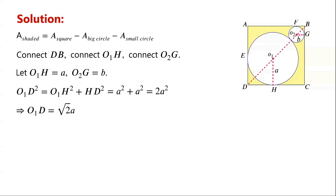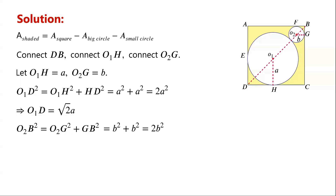Similarly, by the Pythagorean theorem, O2B squared equals O2G squared plus GB squared, which equals B squared plus B squared, which is 2B squared. So O2B equals root 2 times B.